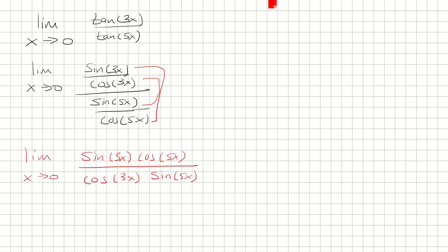Now the goal here is to use the fact that the limit as x approaches 0 of sine(ax) over ax is equal to 1, where a is a real number.